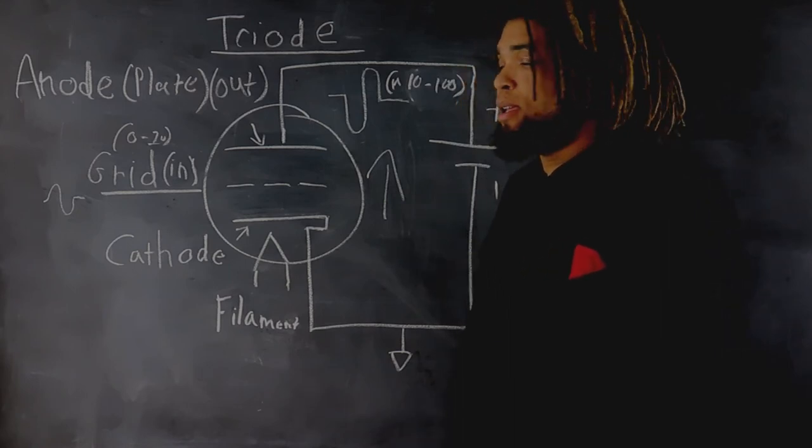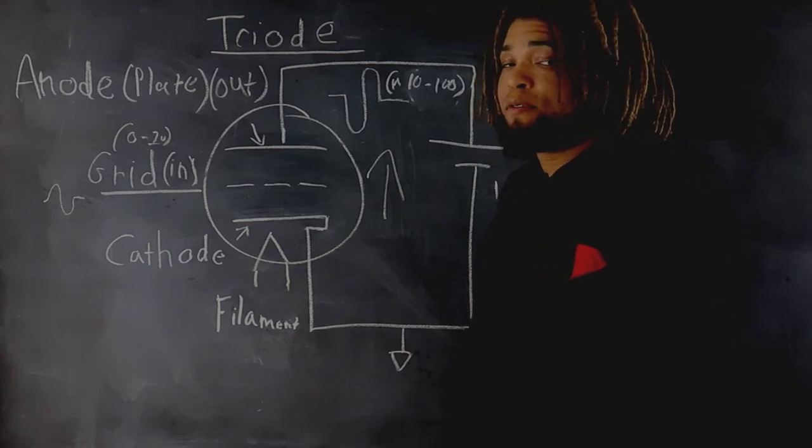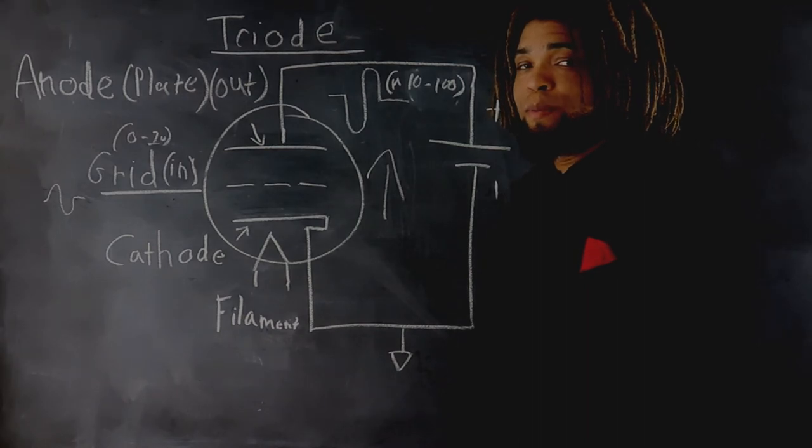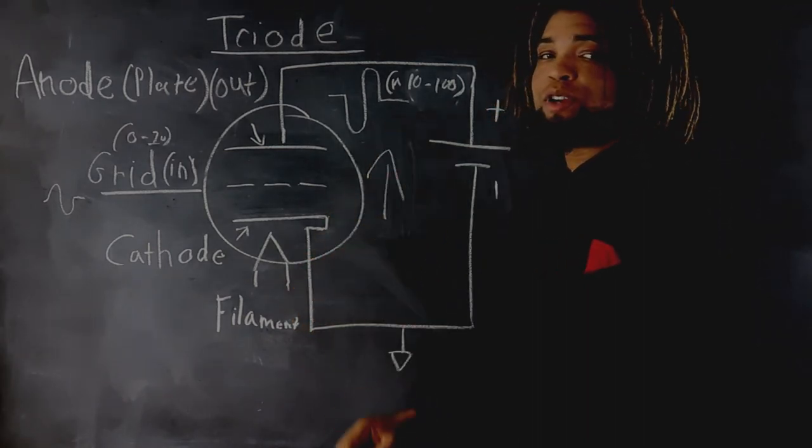One thing to keep in mind is that a common cathode amplifier, which is what we have here on this diagram, naturally inverts your signal.